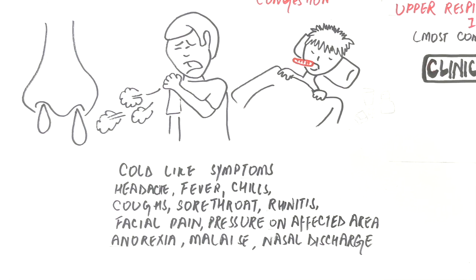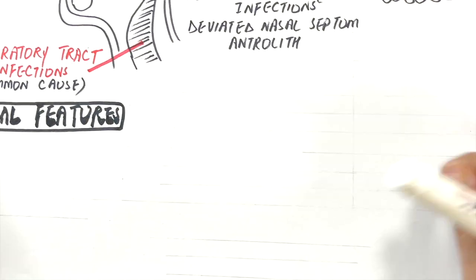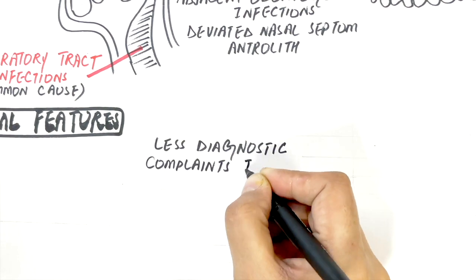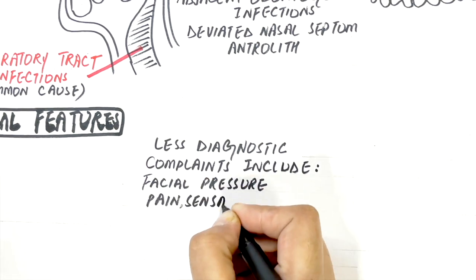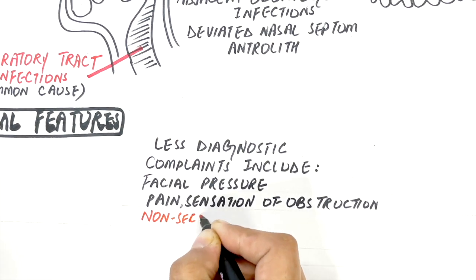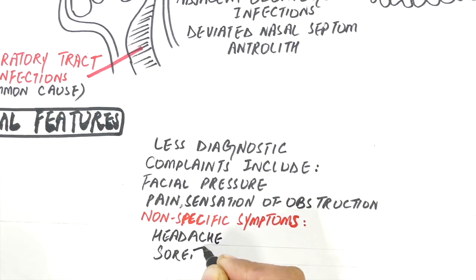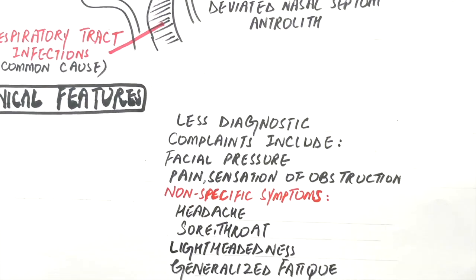Maxillary sinusitis is associated with increased pain when the head is held upright and less discomfort when the patient lies down. Chronic sinusitis, on the contrary, is less diagnostic. Frequent complaints include facial pressure, pain, or a sensation of obstruction. Nonspecific symptoms include headache, sore throat, lightheadedness, or generalized fatigue. Radiographically, the involved sinus appears cloudy with an increased radio opacity.